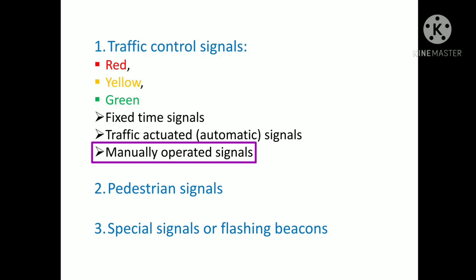Next, manually operated signals. In this type of signal, the traffic police watches the traffic demand from a suitable point during peak hours at the intersection and varies the timings of the phases and cycle accordingly.